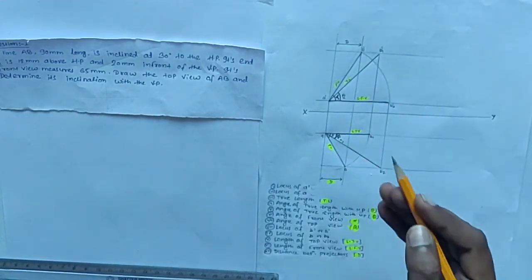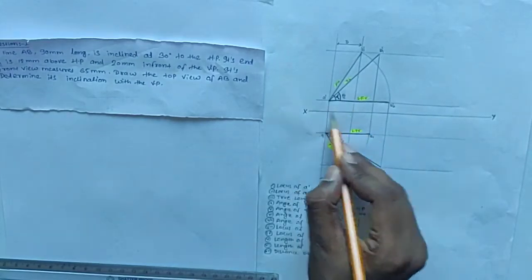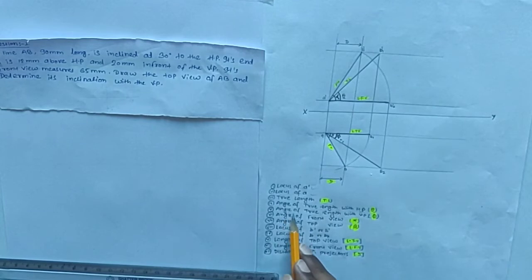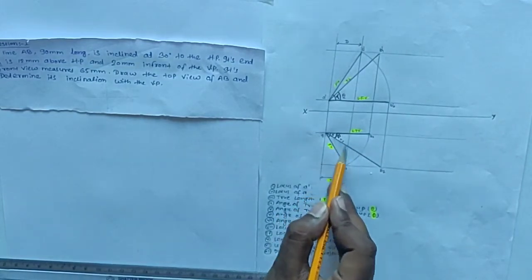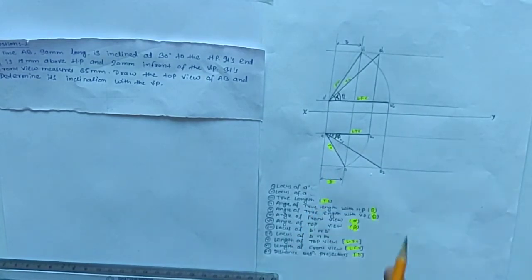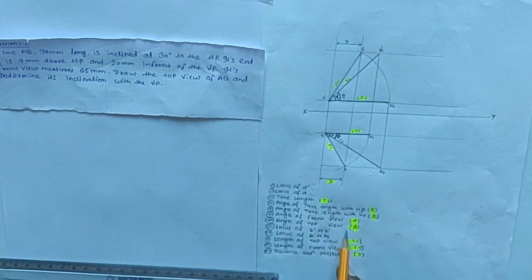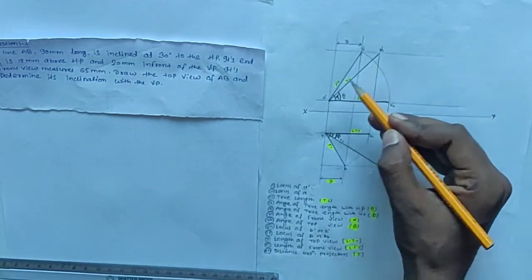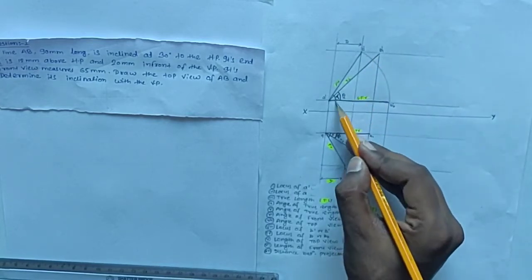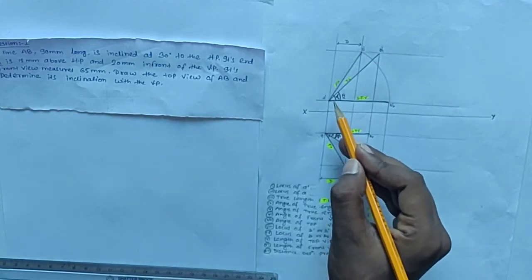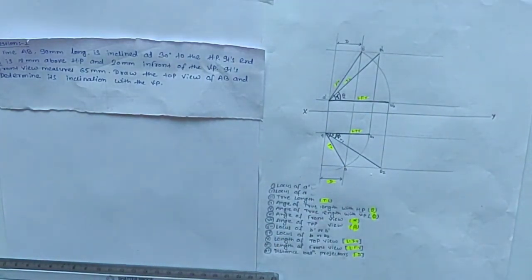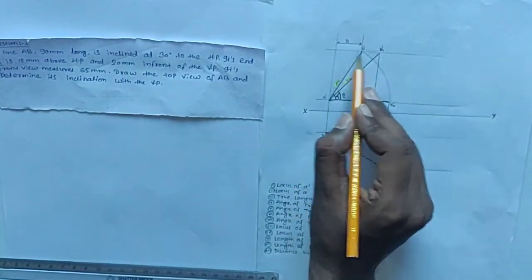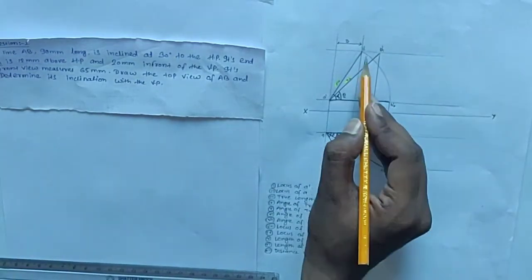Next is angle of true length with HP, represented by theta. Then angle of true length with VP, represented by phi. After that, angle of front view, represented as alpha — this is the angle the front view makes with the reference line. And angle of top view, represented as beta — this is the angle the top view makes with the reference axis.